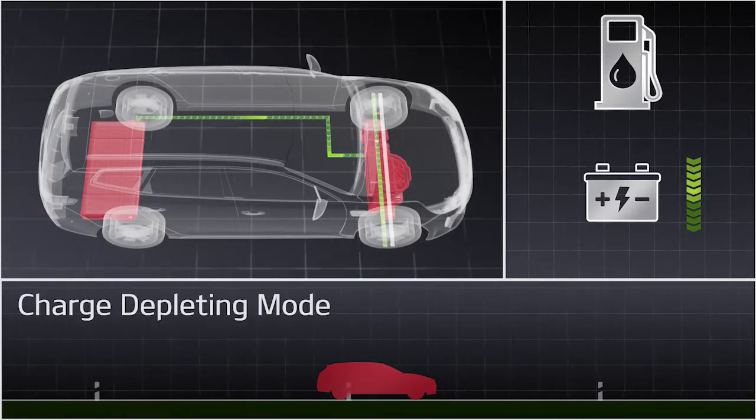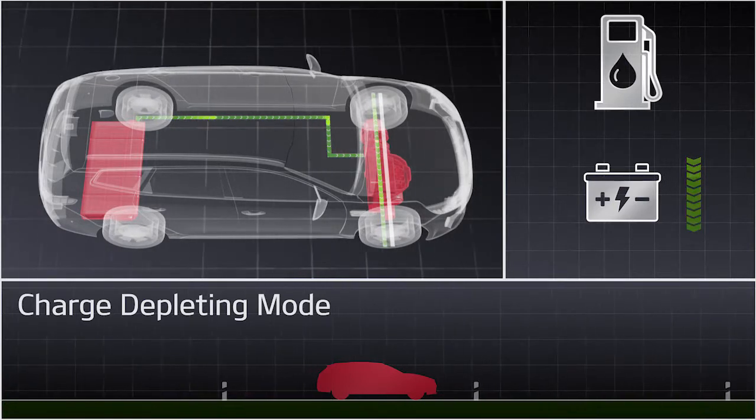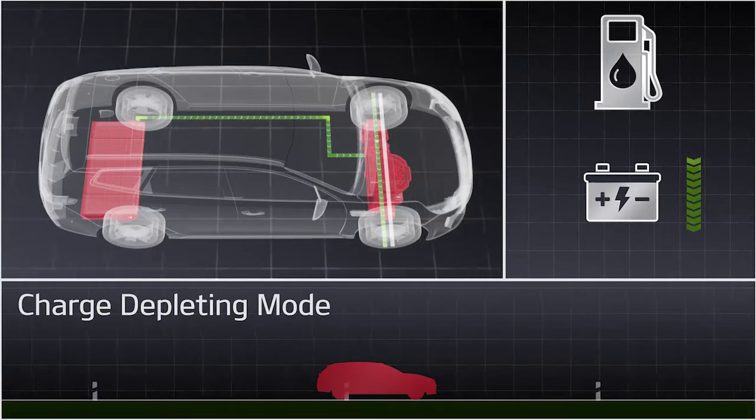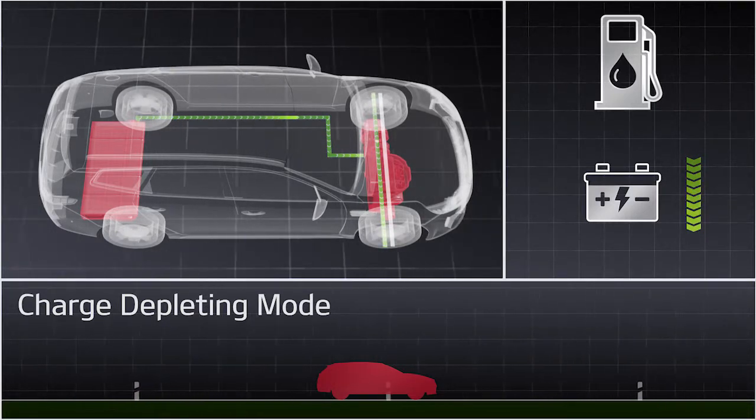The first driving mode is called charge depleting mode. In this mode, the car is driven only by the electric power until the high voltage battery reaches low levels of energy.